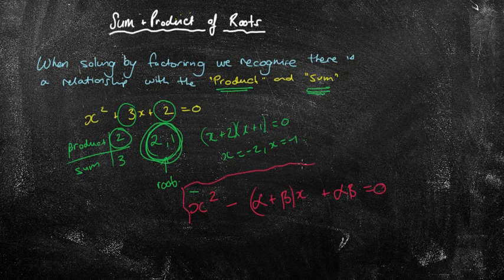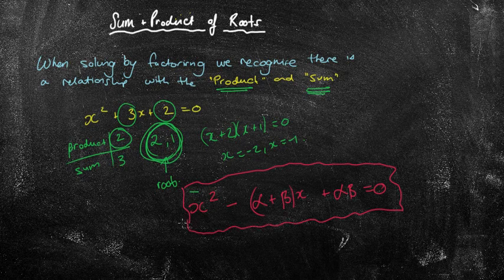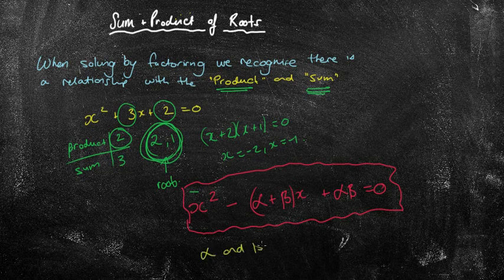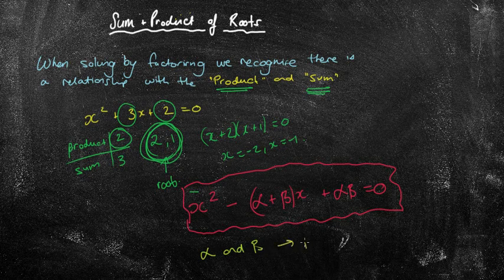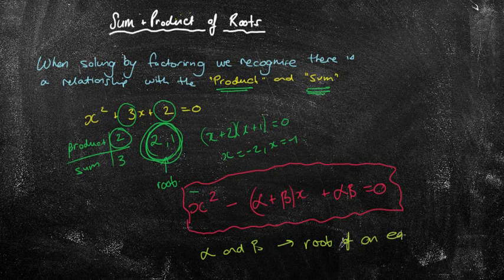Now, I know what you're saying, what on earth is that alpha plus beta and alpha beta? Okay, but they look like angles, and that's what we used to use alpha and beta for. What's going on here? Well, alpha and beta, okay, we let those two letters represent the roots of an equation. Okay, the roots of an equation.